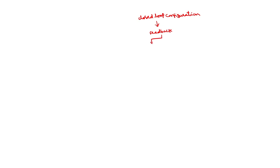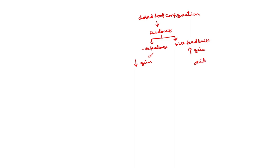In feedback there are two types: negative feedback and positive feedback. Negative feedback decreases the gain — you may have studied this in feedback amplifiers. Positive feedback increases the gain. Positive feedback is used in applications such as oscillators, whereas negative feedback is used in applications such as amplifiers.